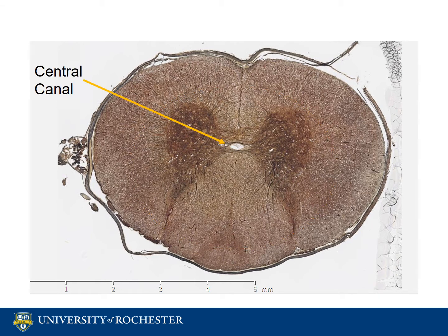The small oval shape in the middle is the central canal, also called the ependymal canal. It spans the entire length of the spinal cord. The central canal is filled with fluid and helps to protect the spinal cord and to give it nutrients.